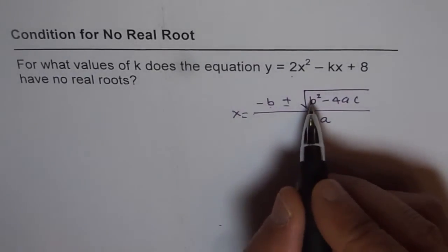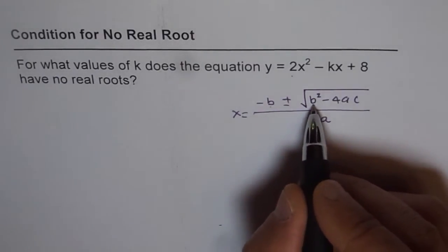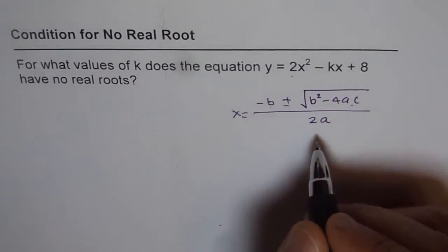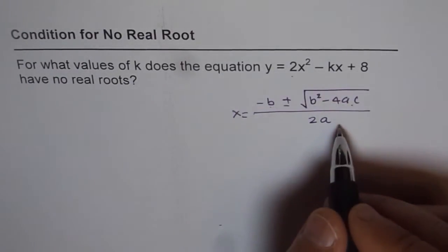Now, as you can see, if this part is called discriminant, if this part is negative inside, then square root of negative number is not real. If square root of this number is not real, then we don't have real roots.